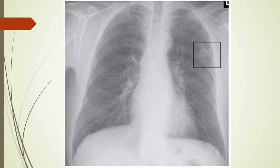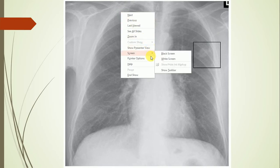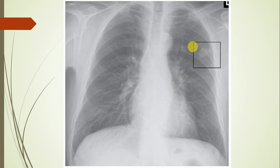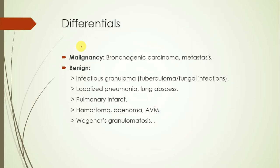Here is the X-ray, and you can clearly see the small nodule in the left upper zone of the lung, which is marked by a black box. So that is the nodule. Now, what should be our basic approach?